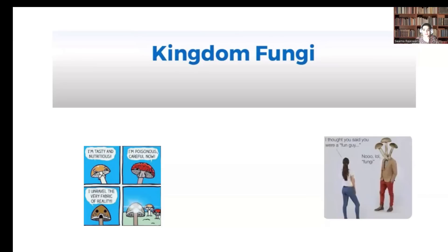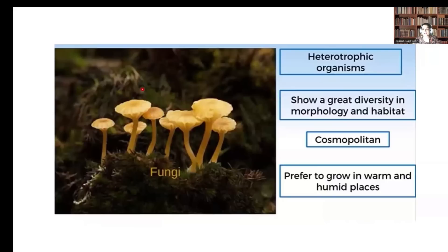Fungi show some characters of plants and some characters of animals, so fungi is given a separate kingdom — Kingdom Fungi. They are heterotrophic organisms, meaning they depend on other organisms for food and cannot prepare their own food by photosynthesis. They show great diversity in morphology and habits, are cosmopolitan in distribution, and prefer to grow in warm and humid places.